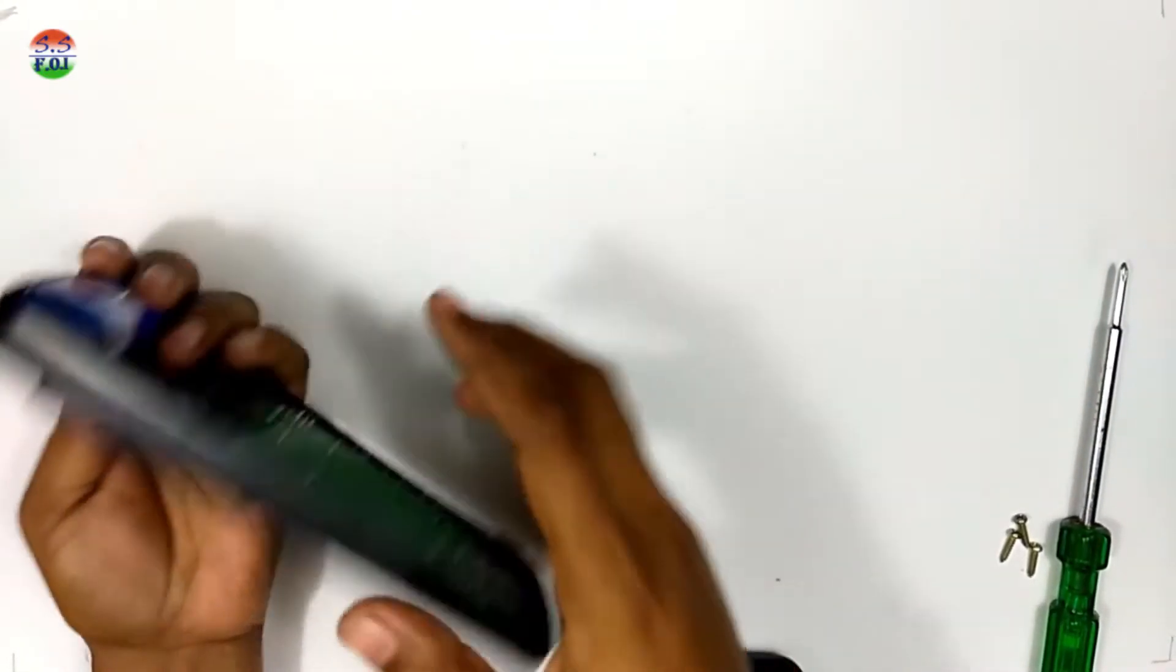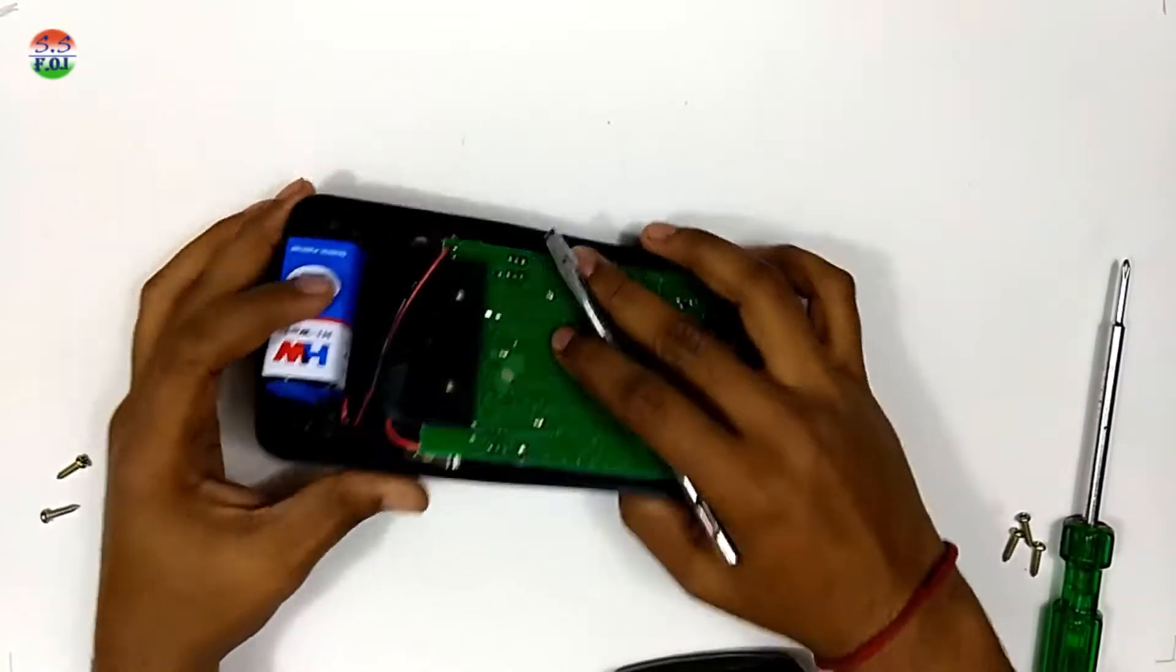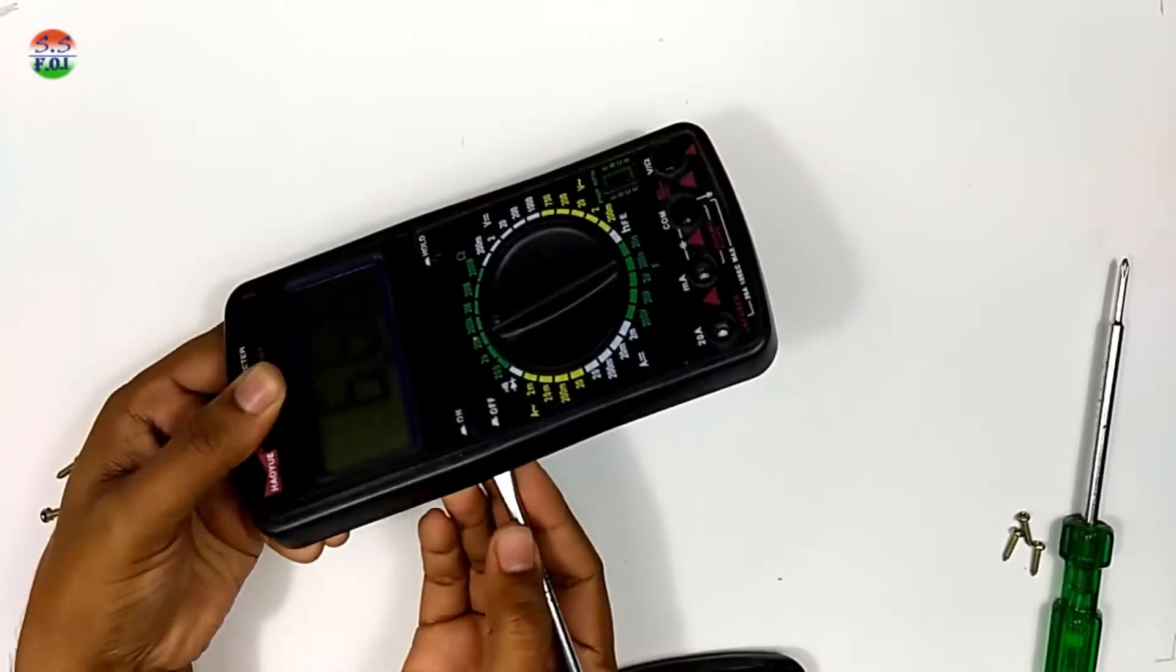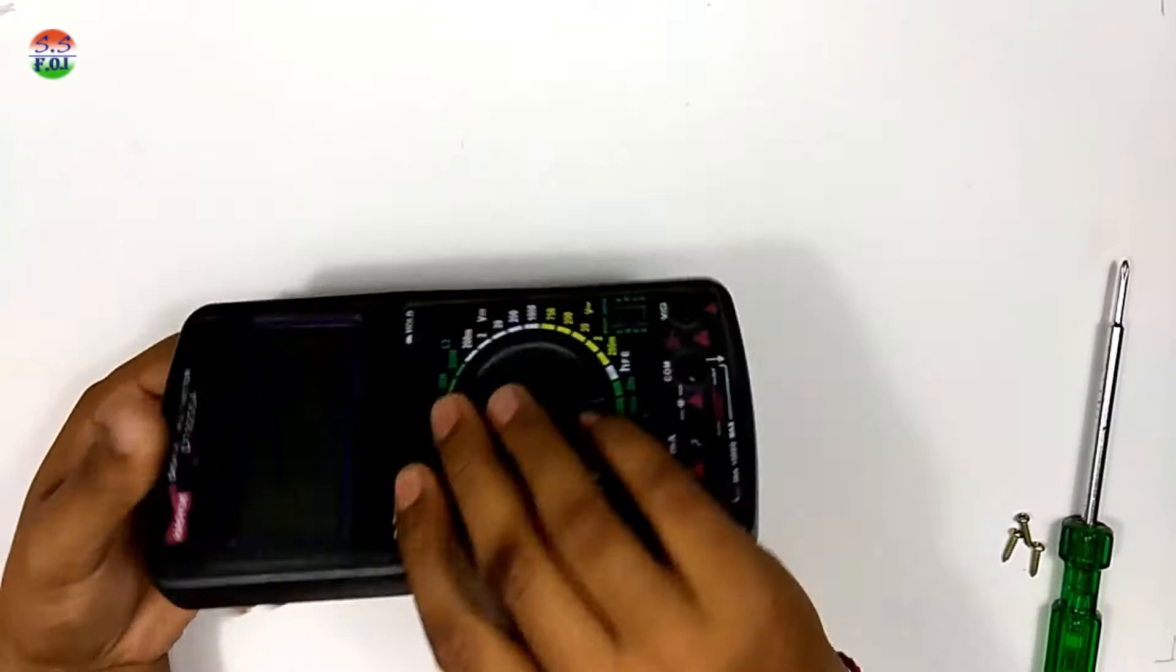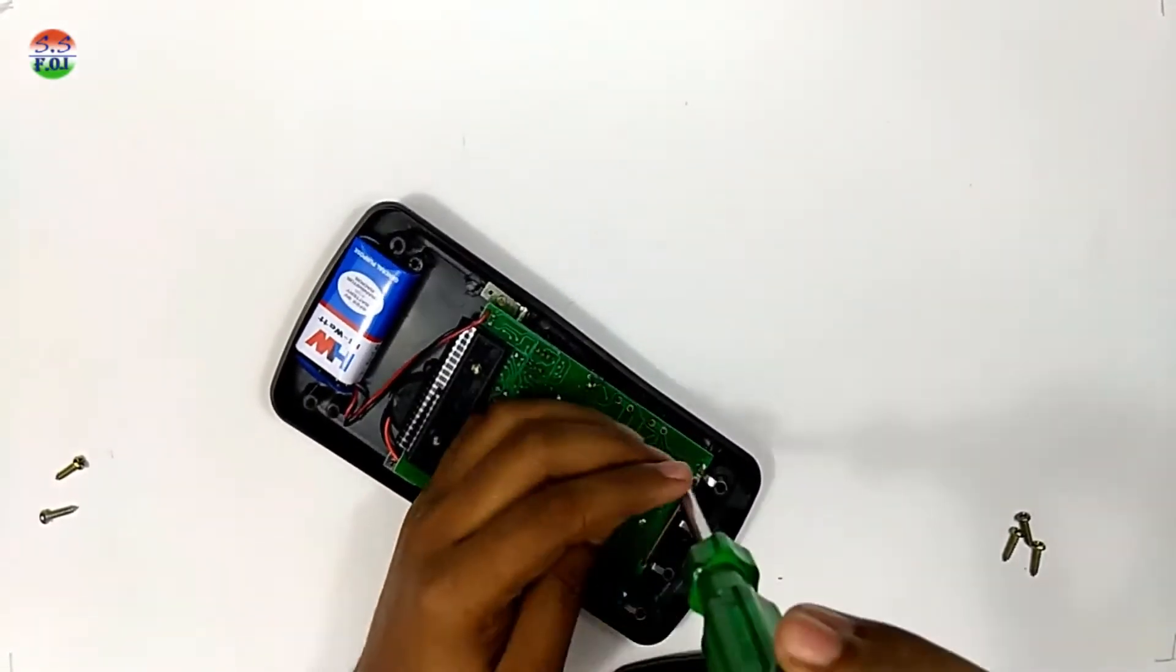First thing we have to check that the power button is fine or not. For that I am going to short the legs of the switch. And here you can see the multimeter is turned on. So we find the problem.